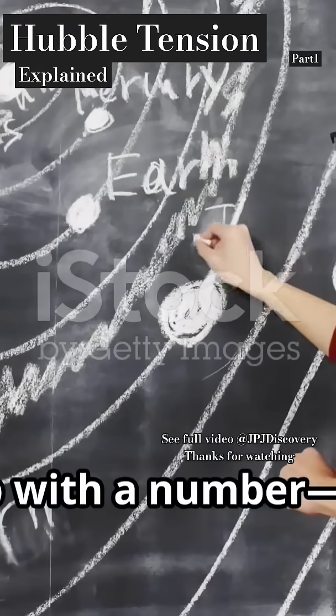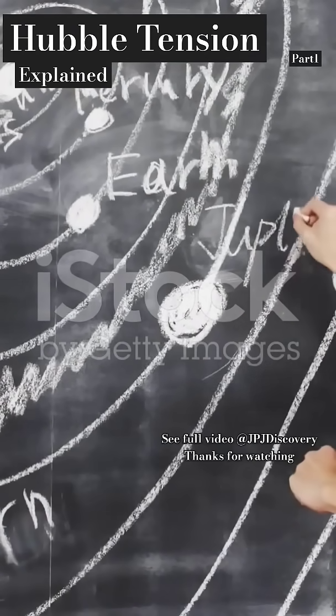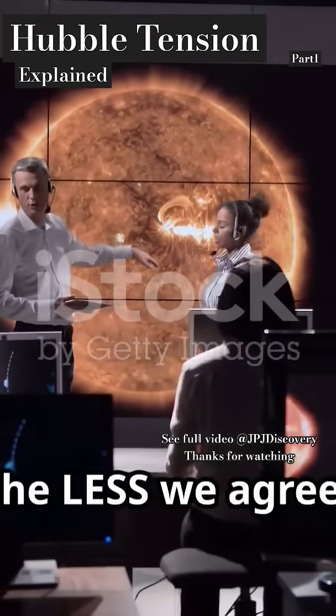He came up with a number, the Hubble Constant, to measure just how fast that's happening. But here's where things get wild. The more we measure, the less we agree.